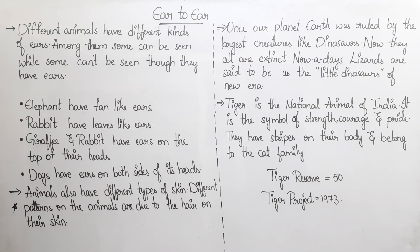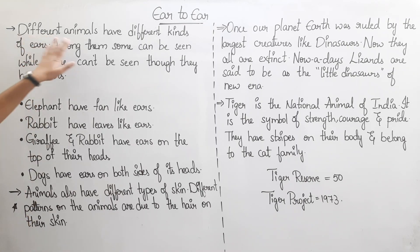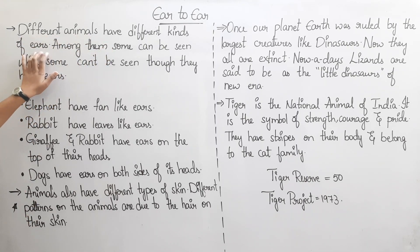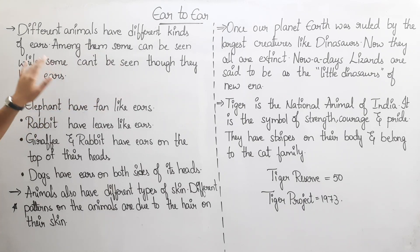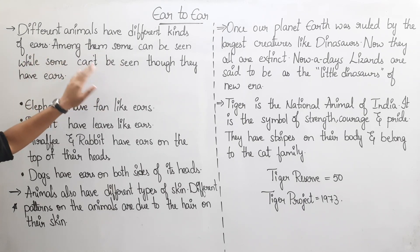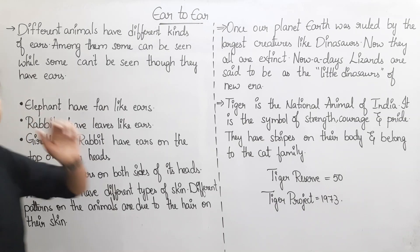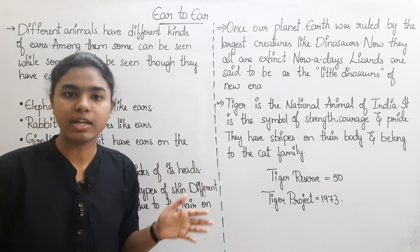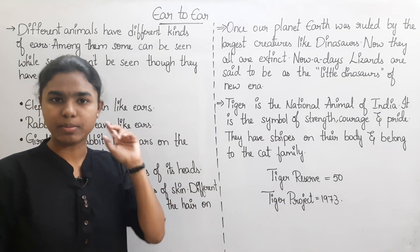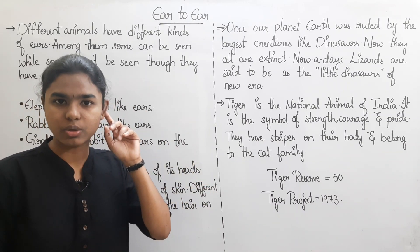Here is our topic: Year to Year. Different animals have different kinds of ears. Among them, some ears can be seen while some cannot be seen, though they have ears. There are different types of animals with different types of ears.